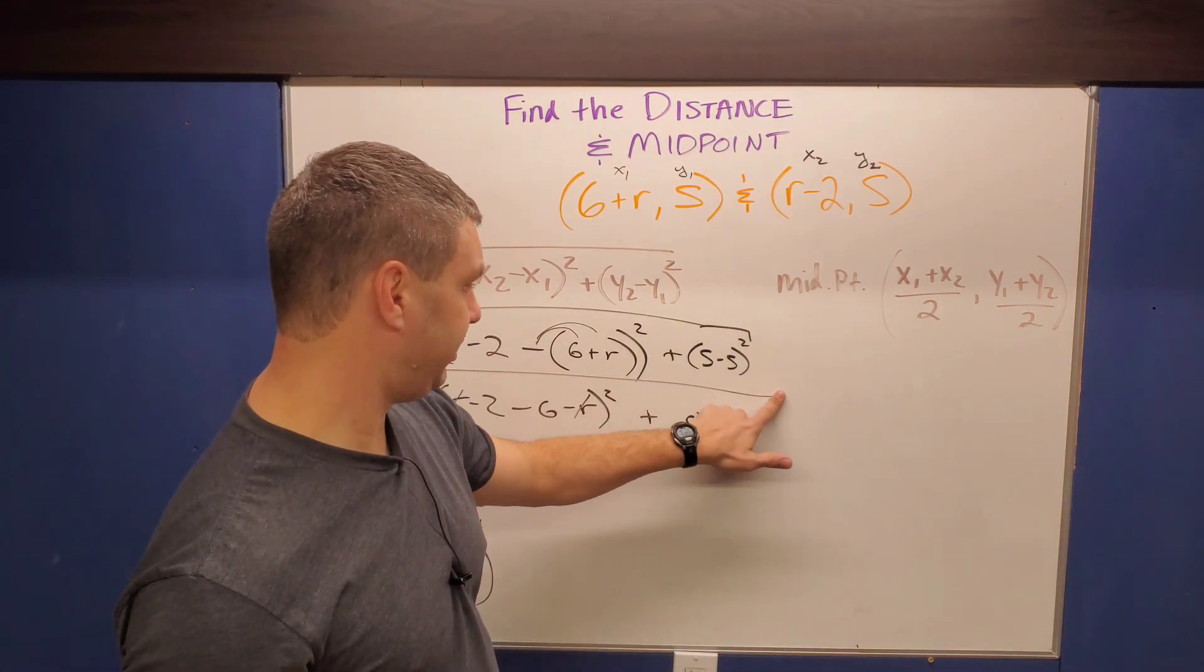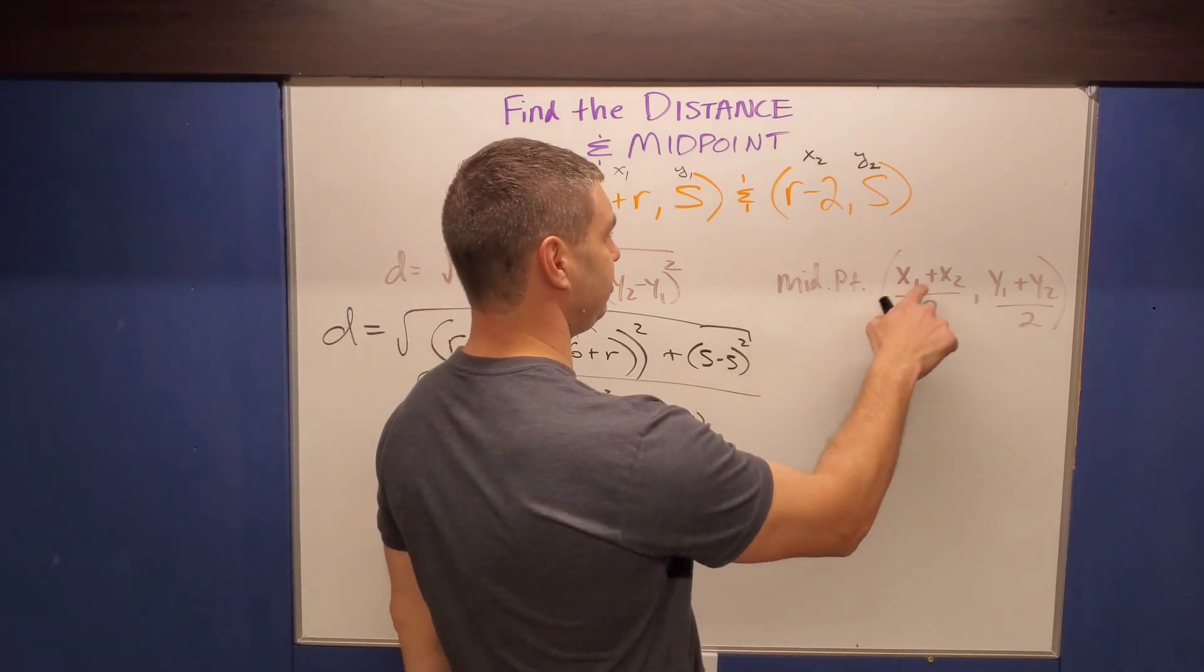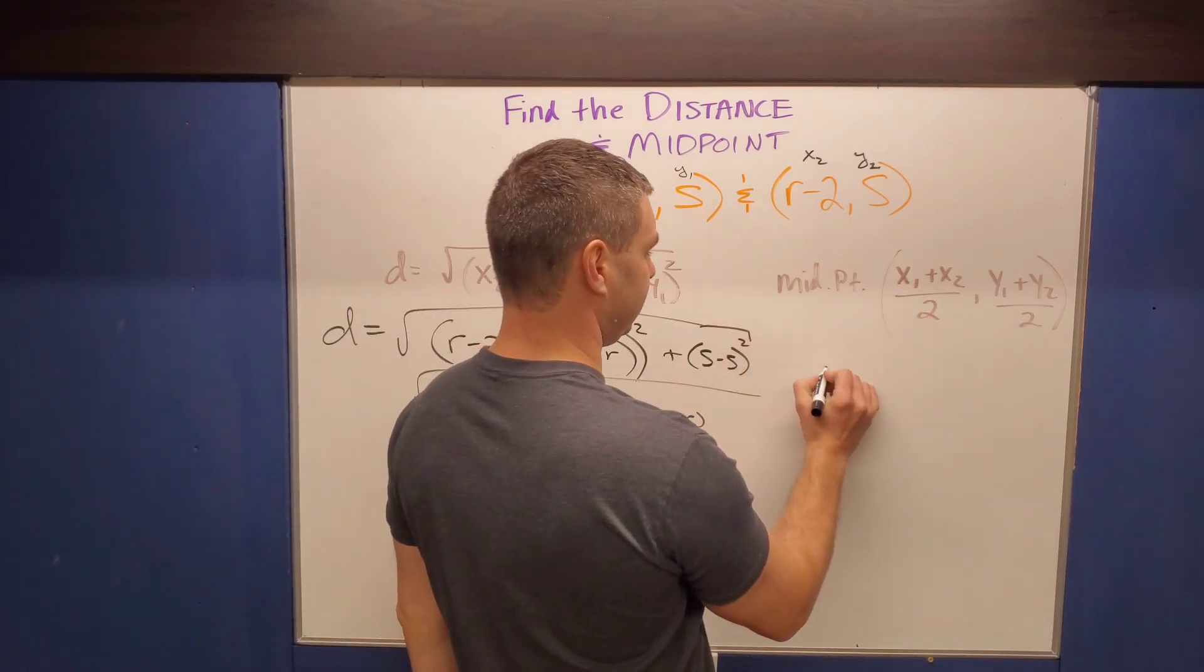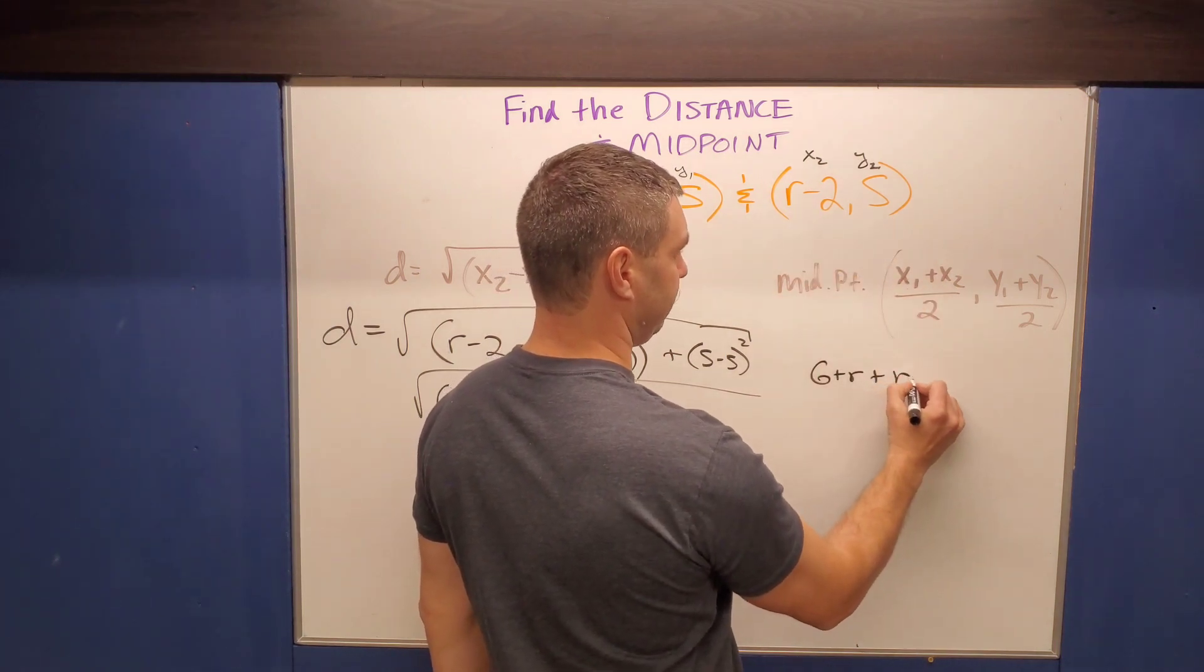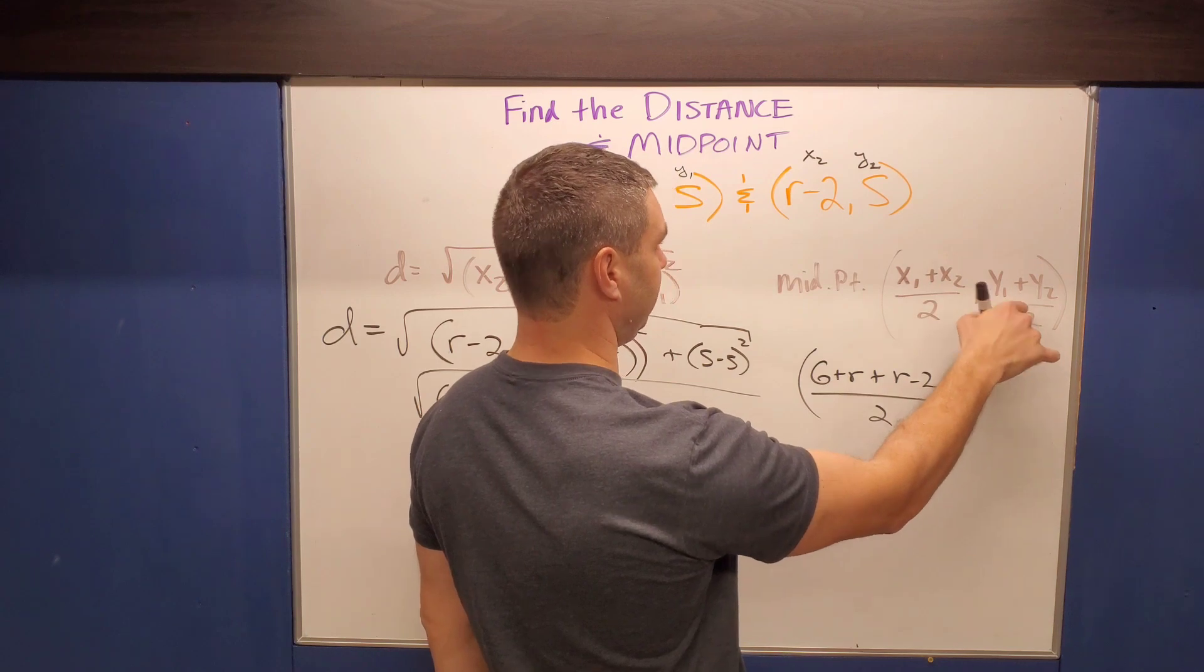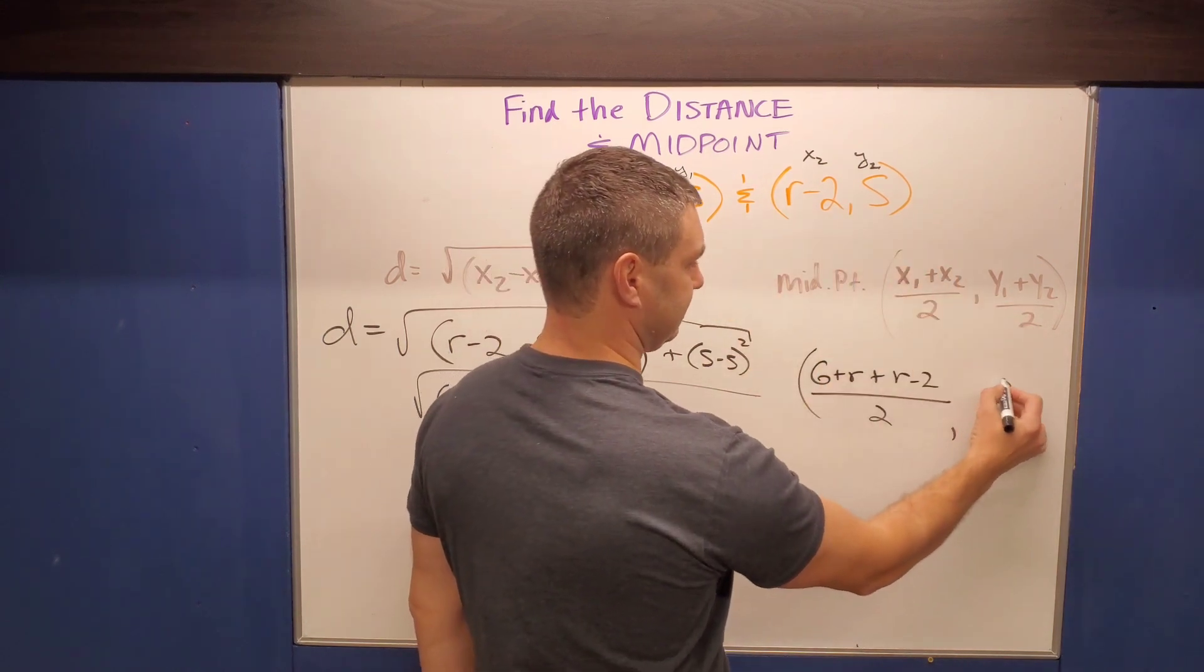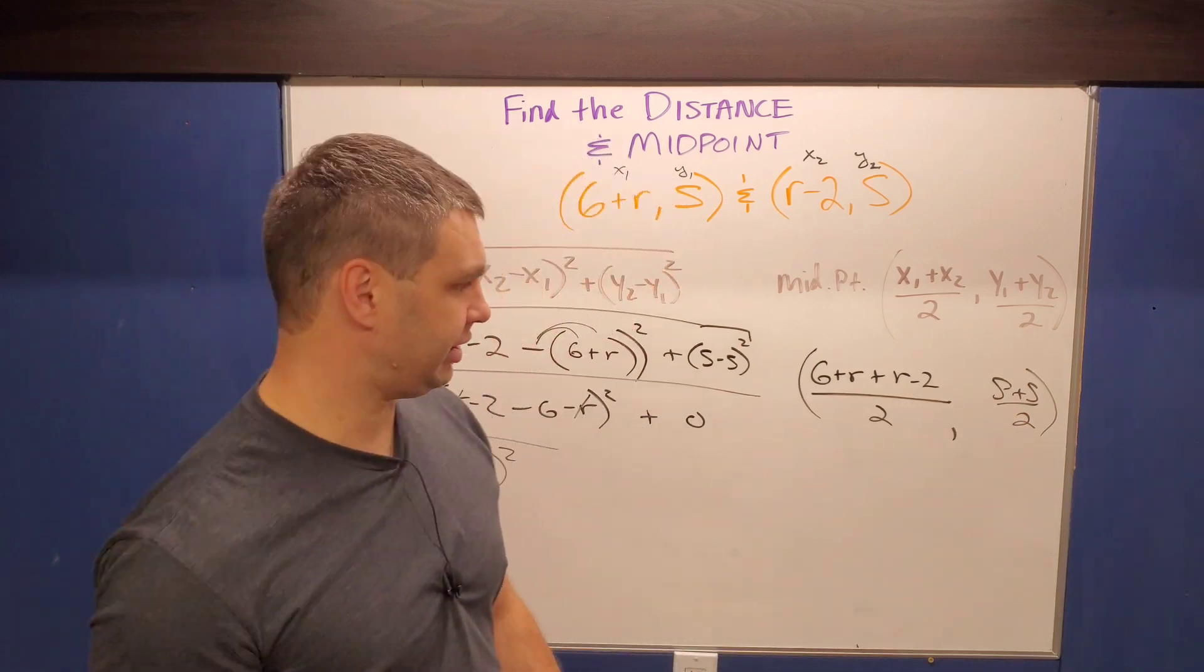The midpoint for this one, maybe a little bit more interesting than the distance in this case. We're gonna take our X one and X two. So six plus R plus the X two is R minus two, all divided by two, comma. The Y's are gonna be just S plus S divided by two. And you'll see what happens there. It's kind of interesting, but look over on this one.